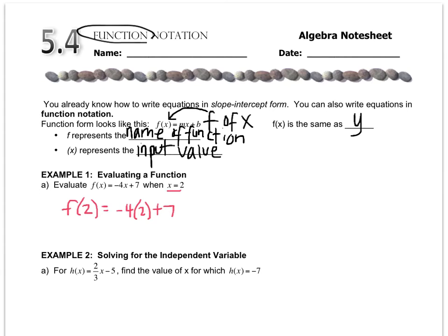So what is f of 2? Well, f of 2 equals negative 8 plus 7. So f of 2 equals negative 1. That's saying that when you plug in 2, you get negative 1. So that's kind of like the point 2, negative 1.